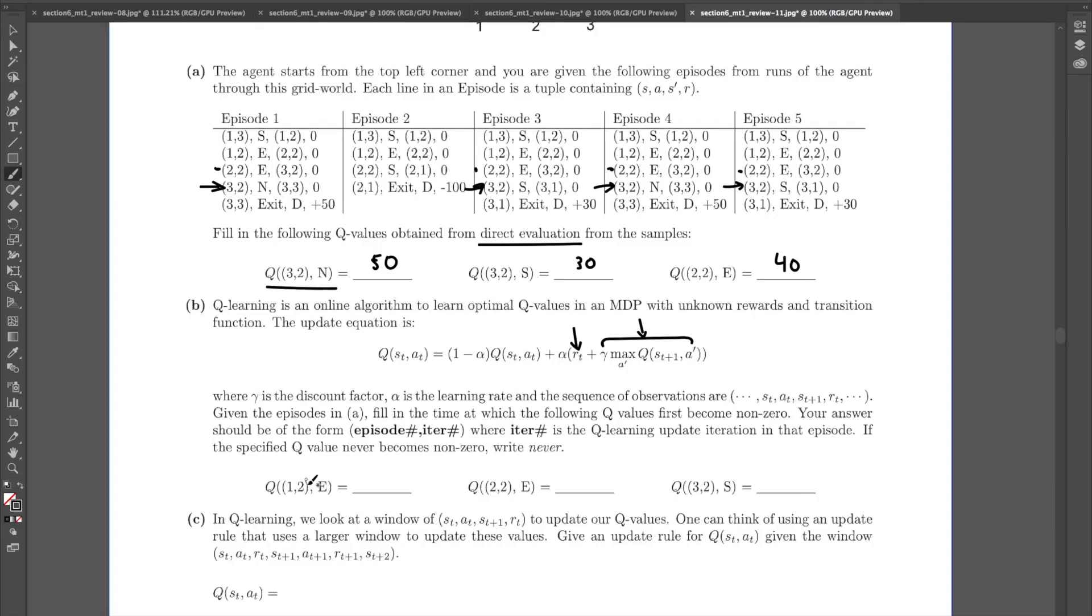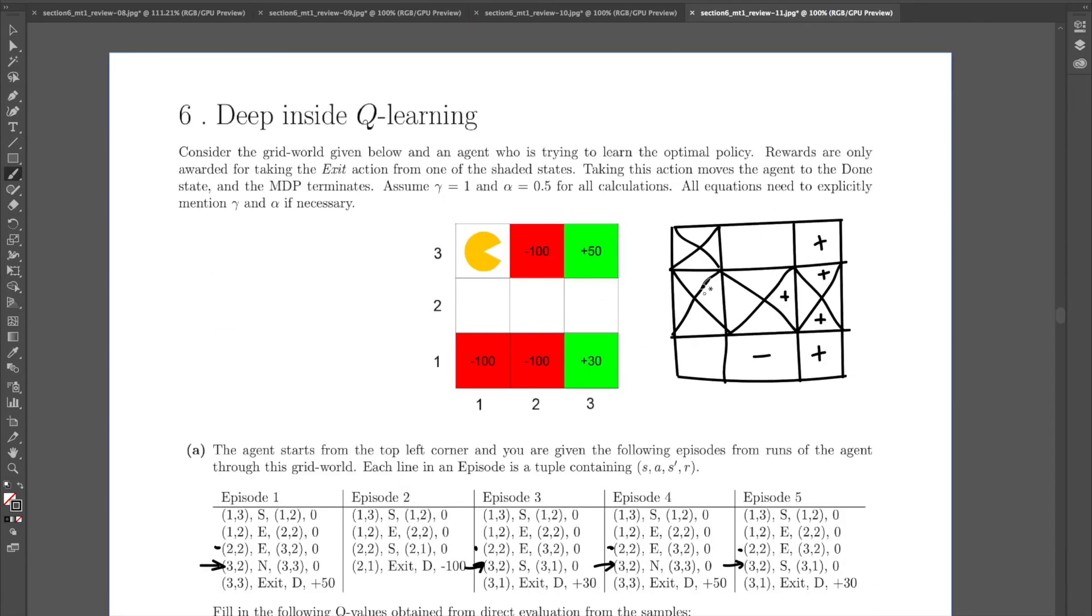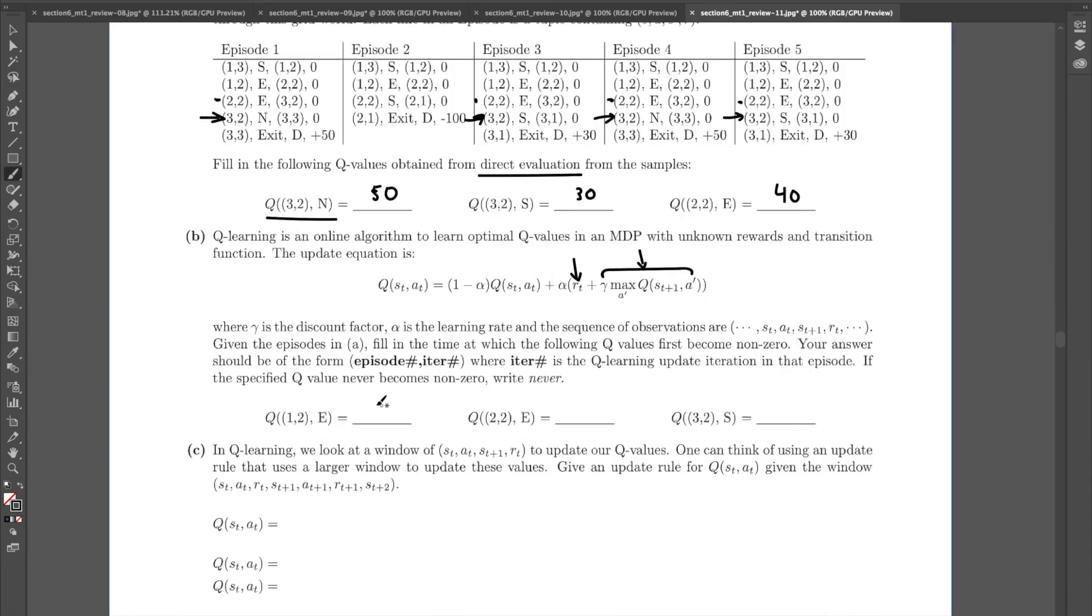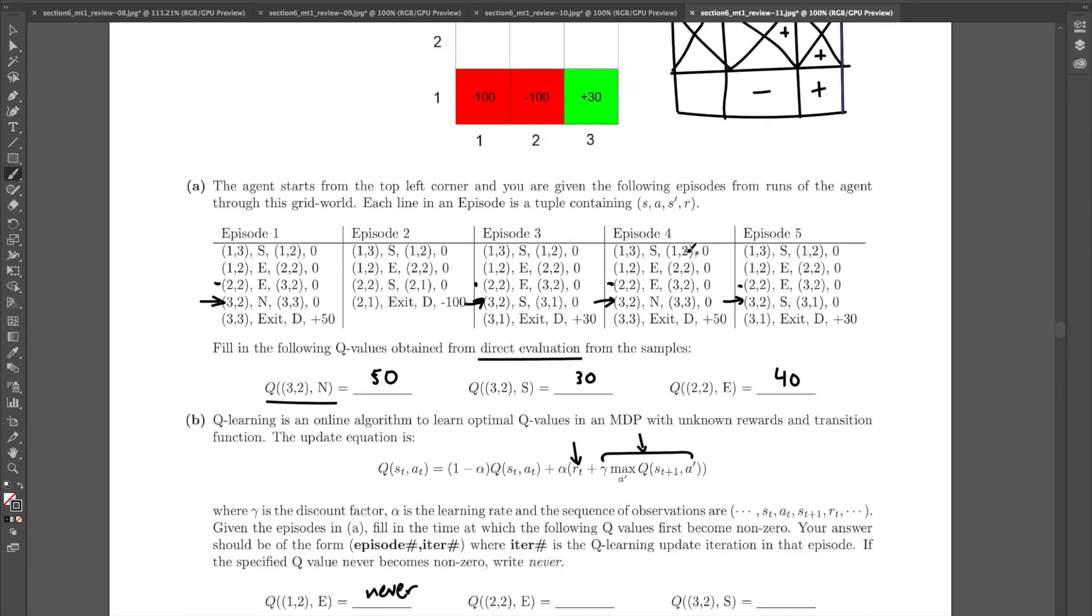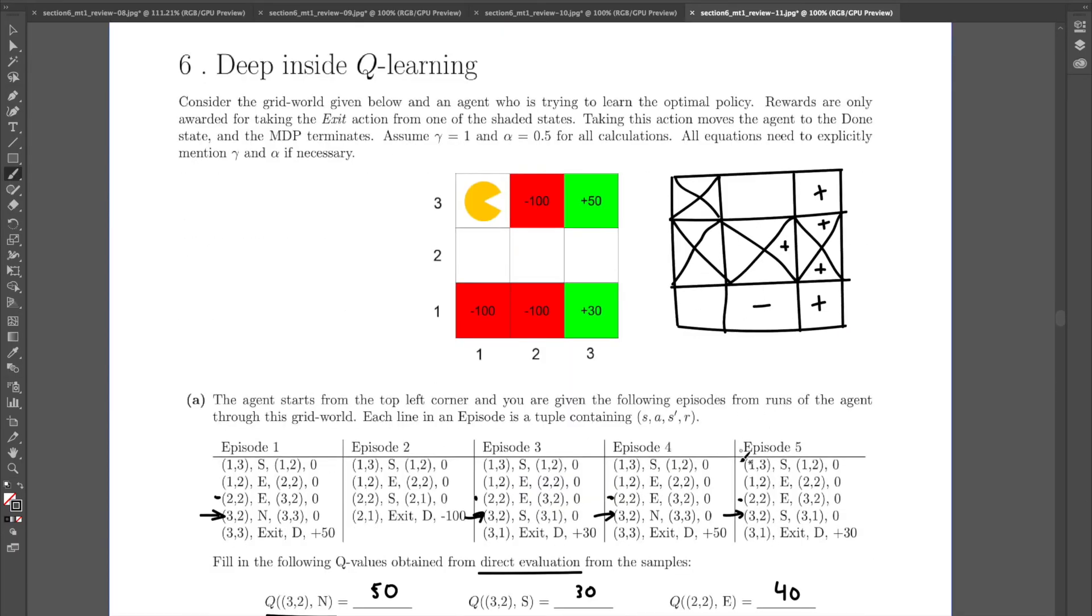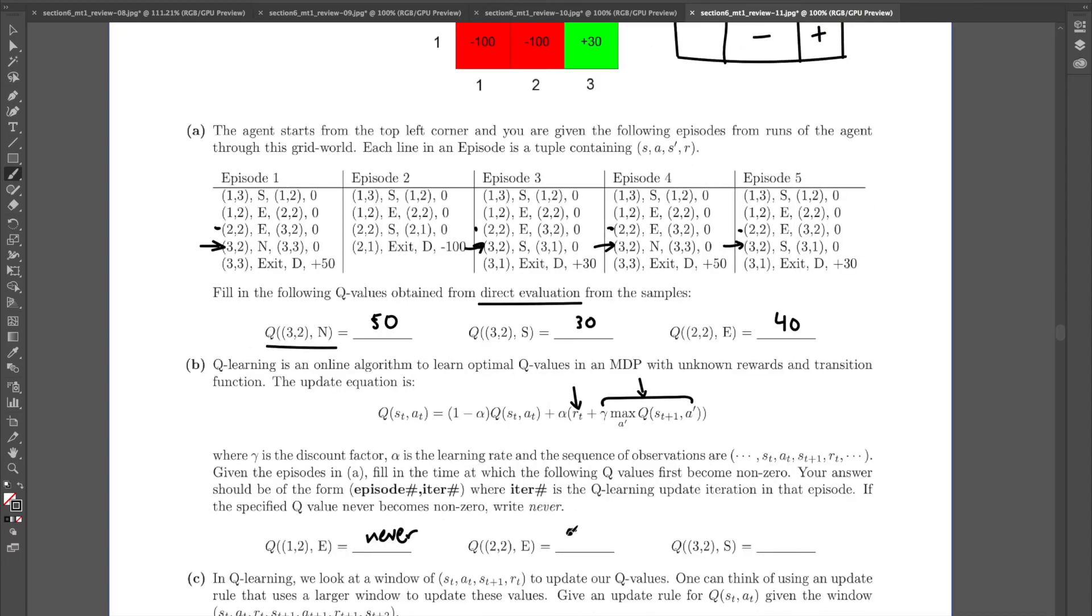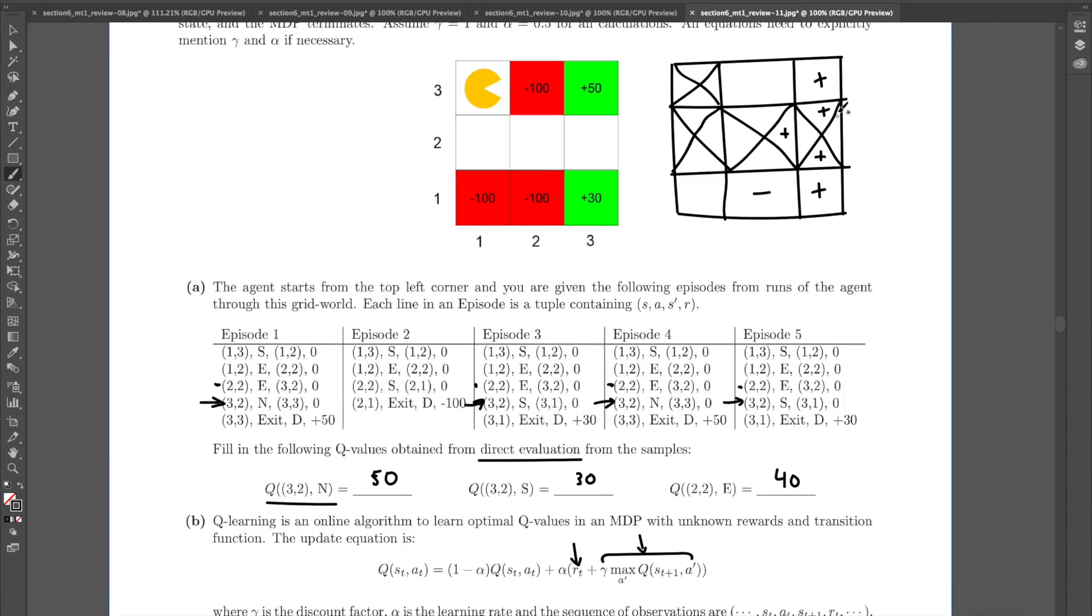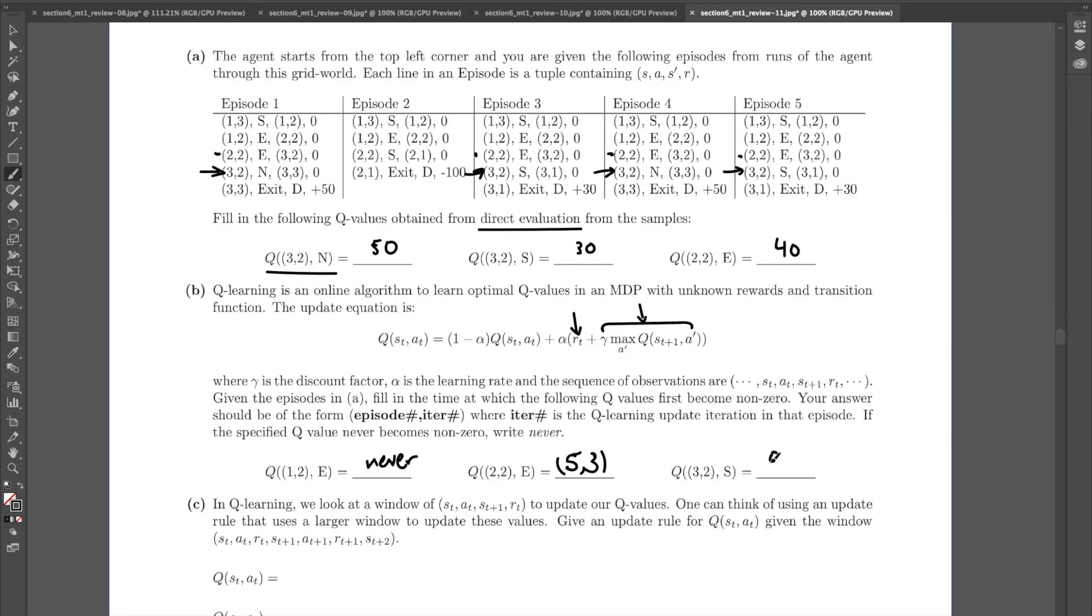Okay, at this point we have everything we need to answer all three of these blanks. So at what point did 1, 2 east become non-zero? Well, it never became non-zero. It's still equal to zero, right? Which means this is just never. What about 2, 2 east? 2, 2 east is this one. And this one actually became positive towards the very end. So it happened in episode 5, iteration number 3. So for this we will write 5, 3. And for this one, 3, 2, s. That corresponds to this one over here. This also became positive towards the end. In fact, it's episode 5, iteration 4. So this one is 5, 4. And that concludes part B.